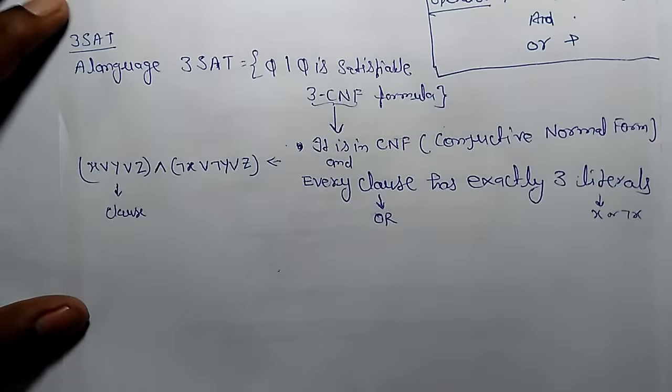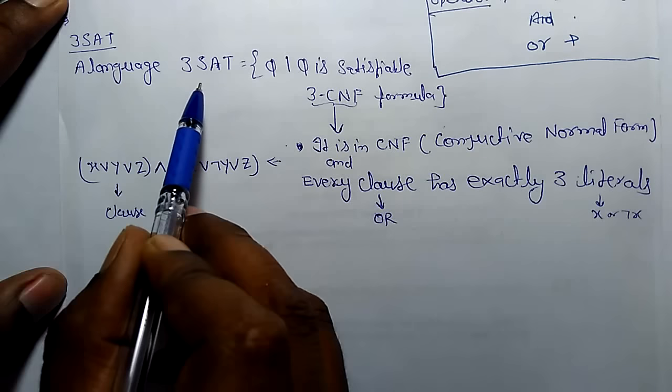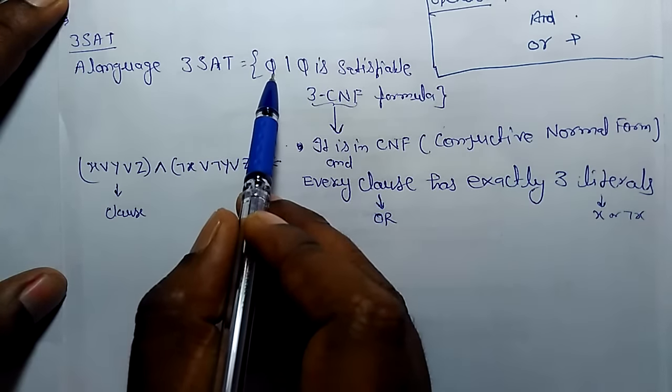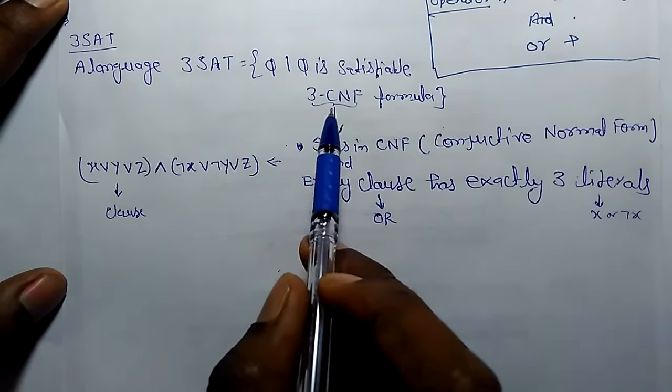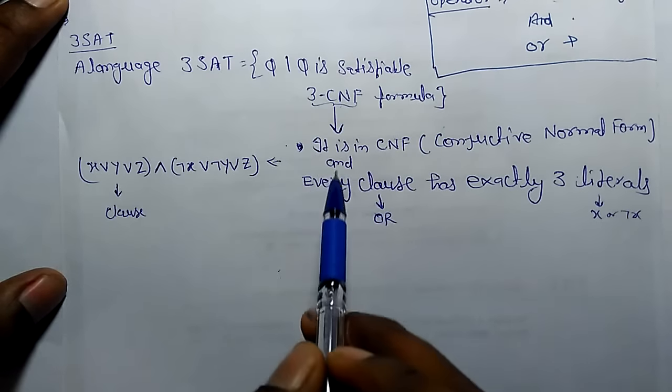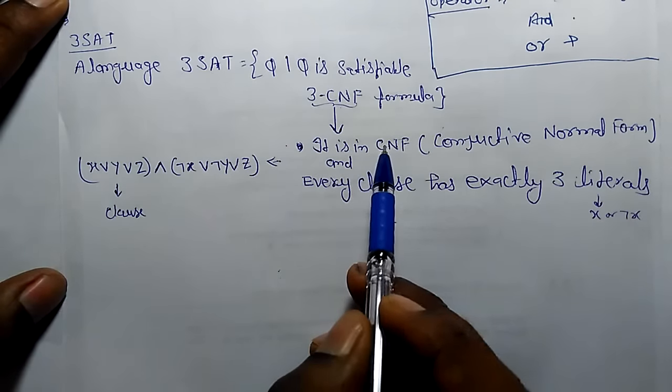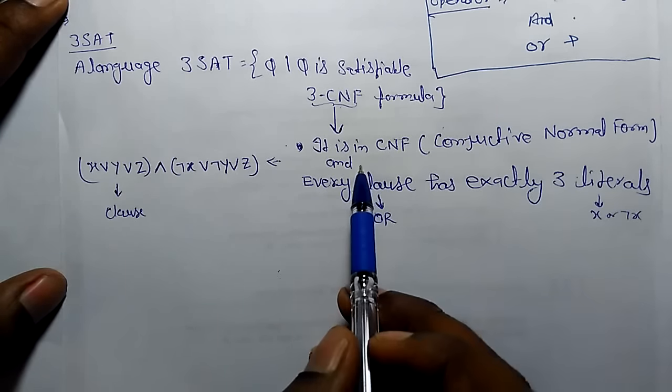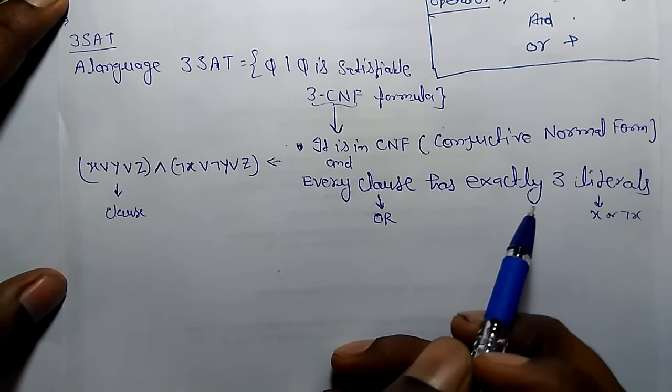There is 3-SAT, which is very popular. A language is 3-SAT if it equals 3-SAT phi, where phi is a satisfiable 3-CNF formula. What is 3-CNF? It has two conditions: it is in CNF (conjunctive normal form), and every clause, which is an OR, has exactly three literals.